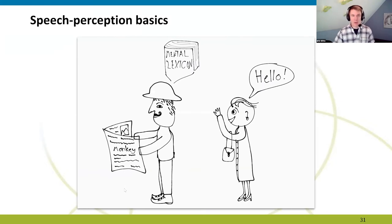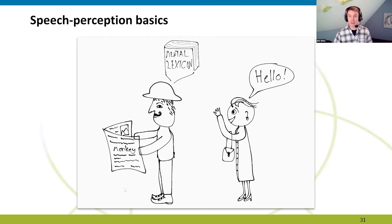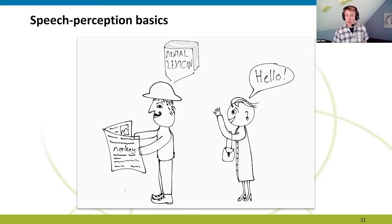Whenever you read a written word or hear a spoken word, the visual or auditory information is processed along with contextual information in multiple relay stations within your brain, in order to find a match in what is called your mental lexicon — where the meanings of all the words you have learned are stored. Accessing the mental lexicon is necessary to understand any word you hear or read, and this process needs to be fast because words come rapidly in speech and written texts.